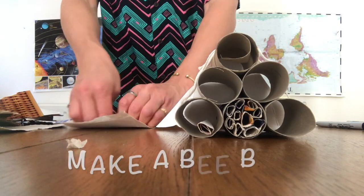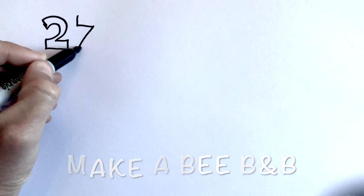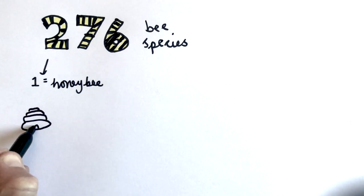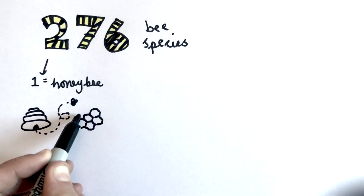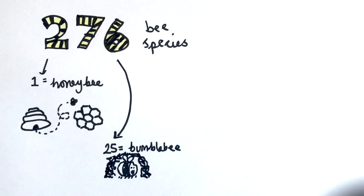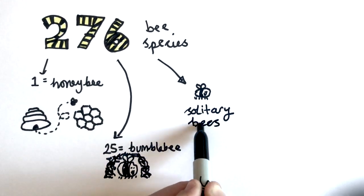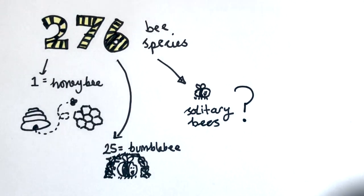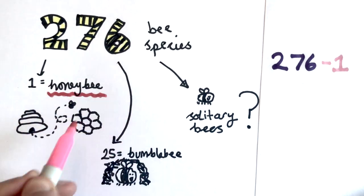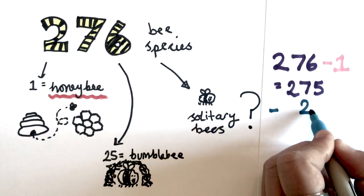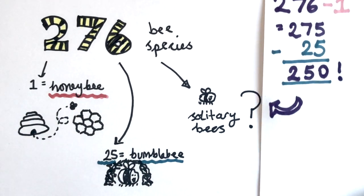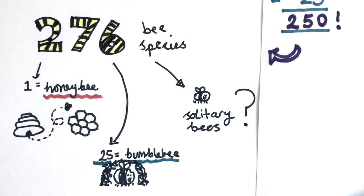Step two: Make a bee and bee. Did you know there are about 276 bee species in the UK? Only one of these is the honey bee, which live in hives. 25 are types of bumble bee, which build nests. And all the rest are solitary bees, which live alone. Can you work out how many solitary bee species there are? Yes, that's 250 solitary bee species.